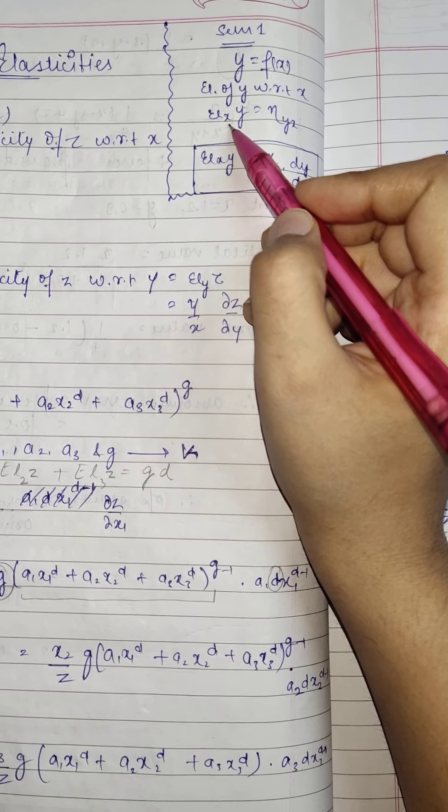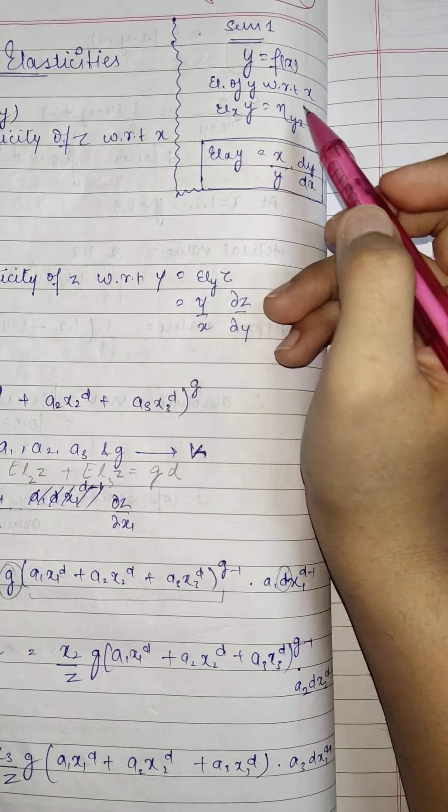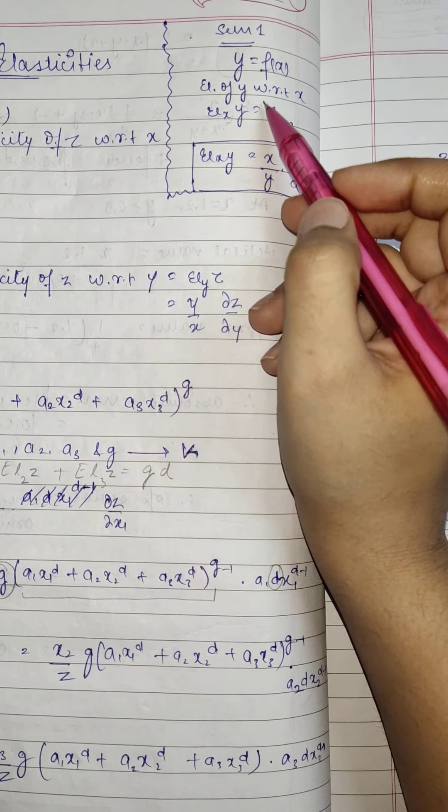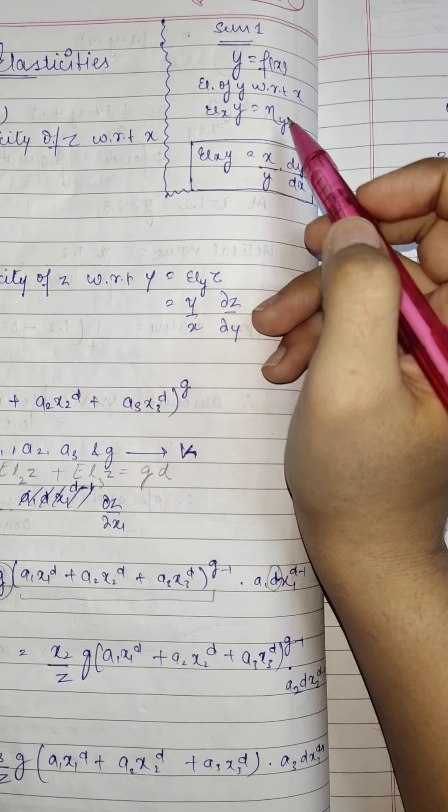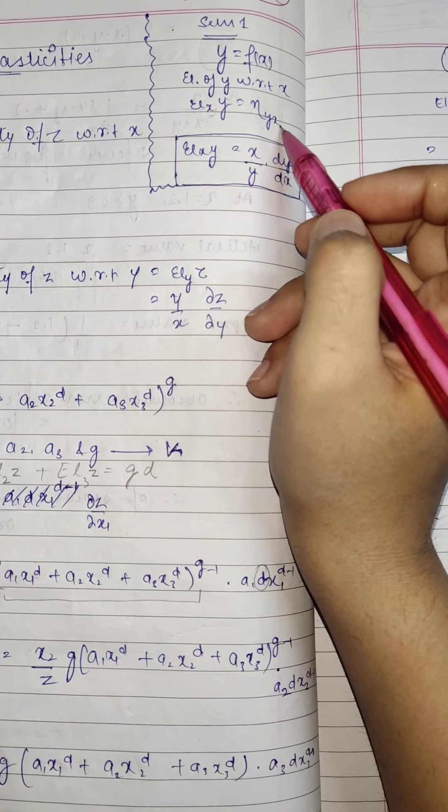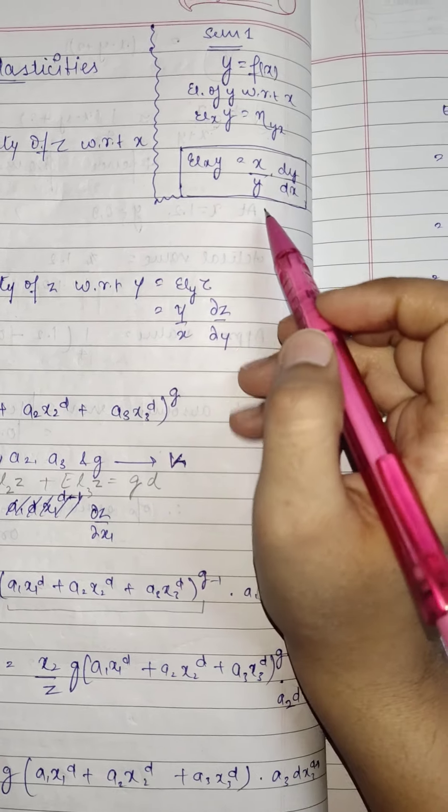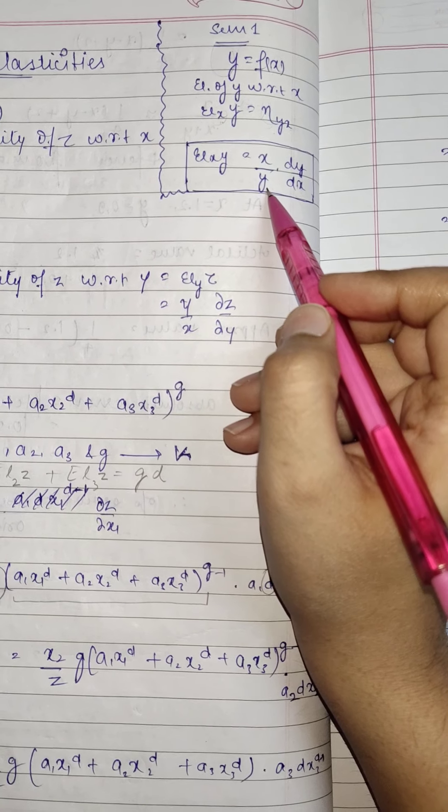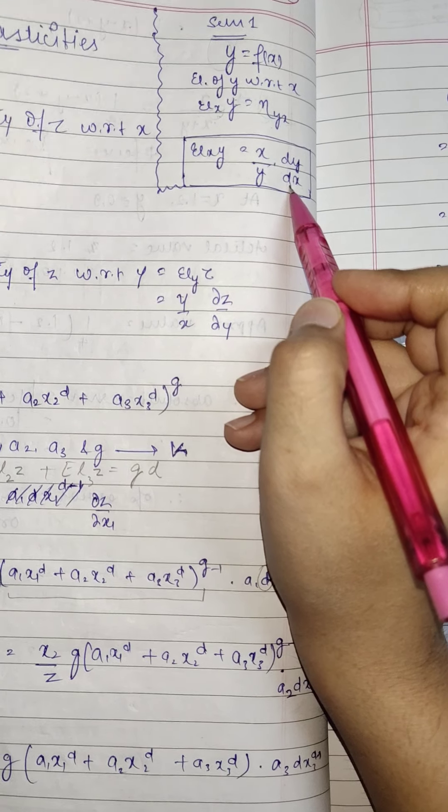We write x as a base, just like log of x to some base equals eta. We call this particular variable as eta of yx. So elasticity of y with respect to x, and the formula was x upon y times dy upon dx.